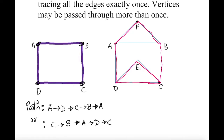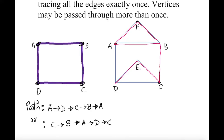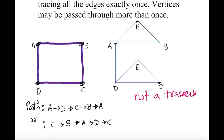Let me try one more time. No — I left two edges untraced. After trial and error, I clearly cannot trace it. So this is not a traversable network, whereas the first one is a traversable network.